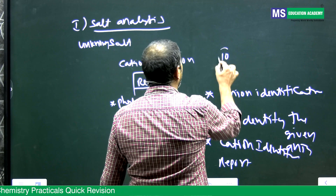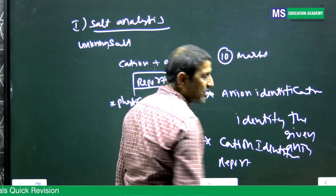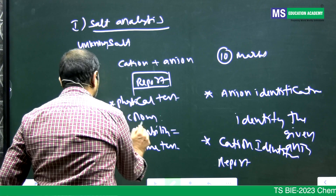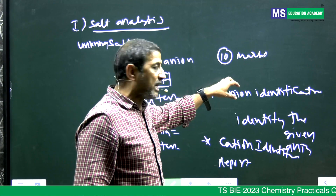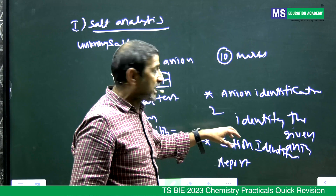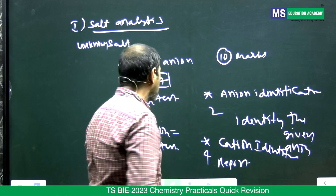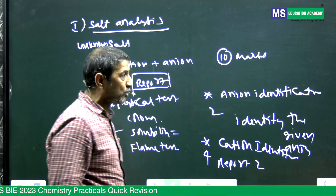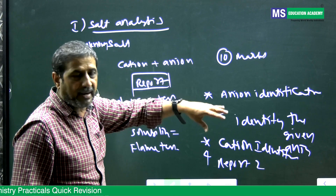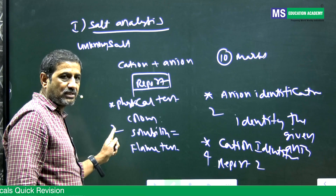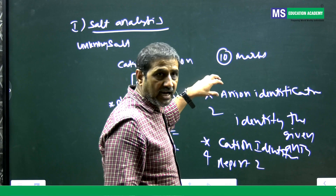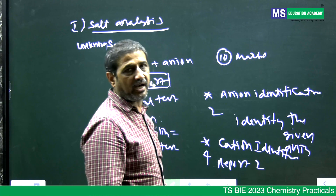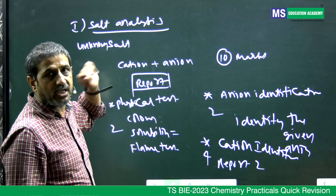For question one, you will get 10 marks divided in a stepwise manner: 2 marks for physical tests, 2 marks for anion identification, 4 marks for cation identification, and 2 marks for writing the correct final report. Total: 10 marks.